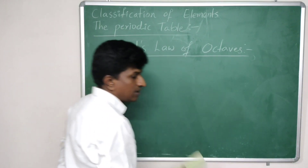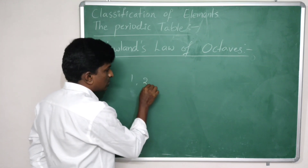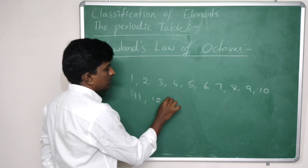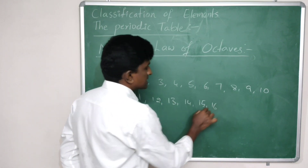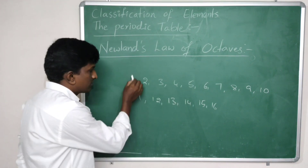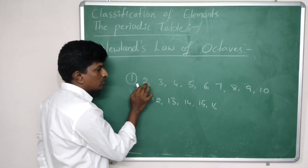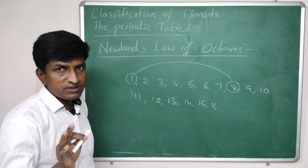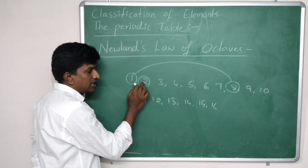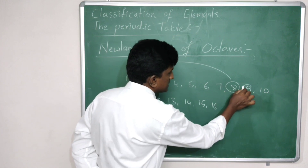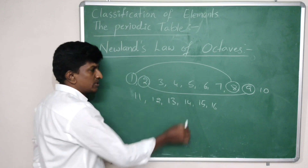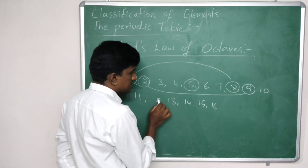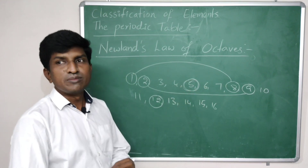According to Newlands' classification, when elements are arranged in ascending order of atomic weight, the first element and the eighth element show similar properties. For example, arranging elements 1 through 16, the 1st and 8th show similar properties, the 2nd and 9th show similar properties, the 5th and 12th show similar properties, and so on.